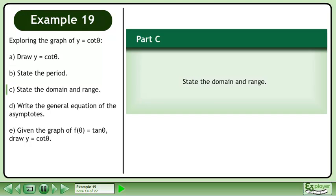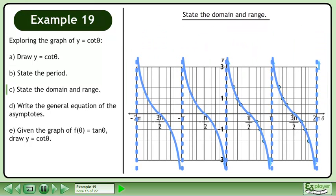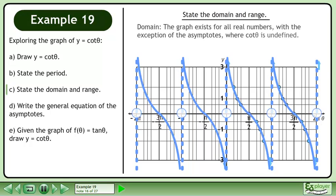In Part C, state the domain and range. Bring up the graph of y equals cotan theta. The graph exists for all real numbers with the exception of the asymptotes where cotan theta is undefined. The domain is theta belongs to a set of real numbers with the restriction that theta cannot equal n pi, where n belongs to the set of integers.